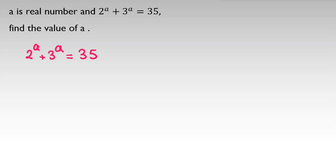We try to find at least one answer. For example, if a equals 1, the result is less than 35. If a equals 3, then 2^3 + 3^3 = 8 + 27 = 35, which is one answer.